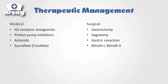Medically, we can manage peptic ulcer disease with medications. We can use H2 receptor antagonists — histamine-2 receptor antagonists — and proton pump inhibitors. Both of these decrease gastric acid secretion, though they do it in different ways.